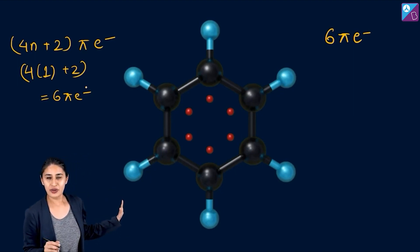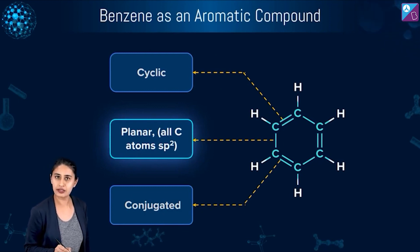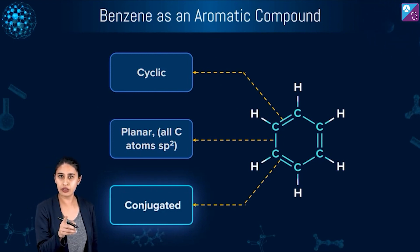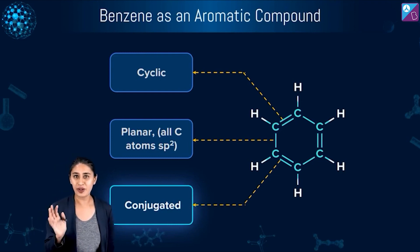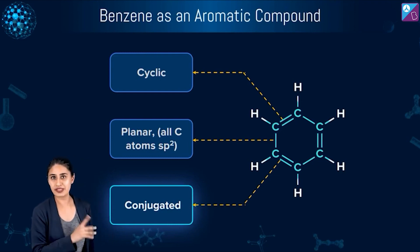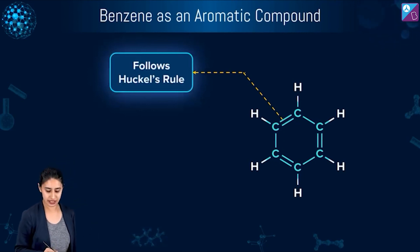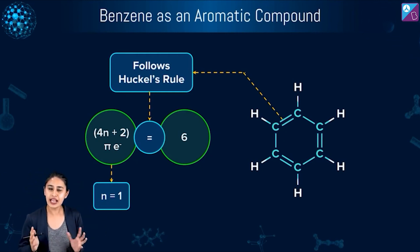Are you able to understand all four conditions when we talk about benzene? First condition — it is cyclic. Second — it is planar, all carbon atoms are sp2 hybridized. Third condition — it is conjugated; each pi bond is separated by one single bond. Fourth and most important — it follows Hückel's rule, because there are 6 pi electrons and putting n=1 gives 6 pi electrons. So benzene is aromatic.